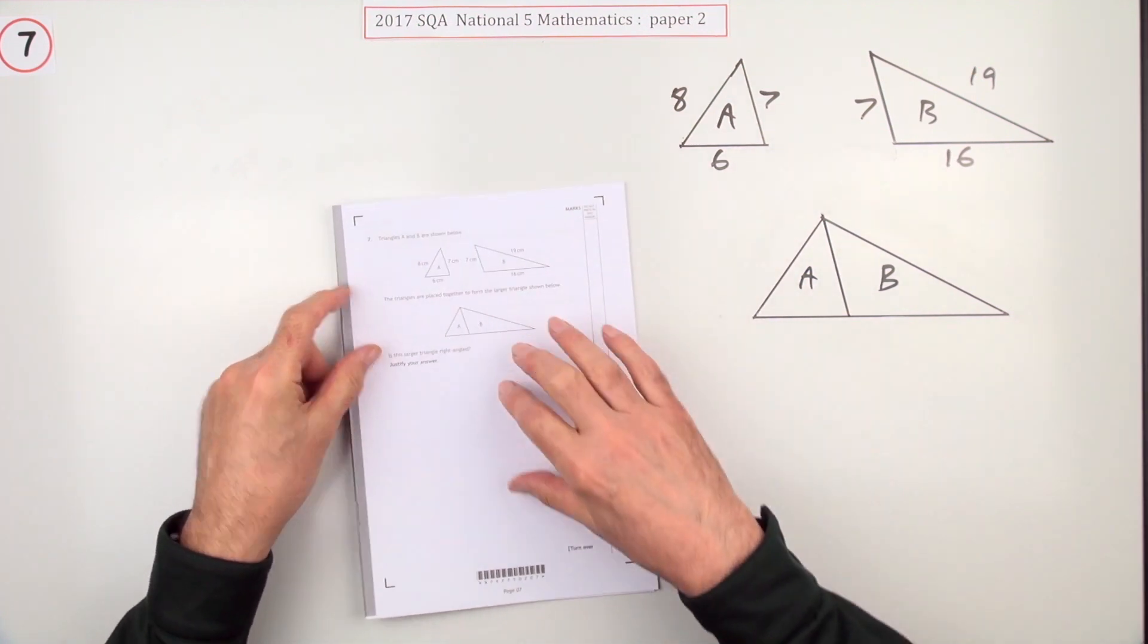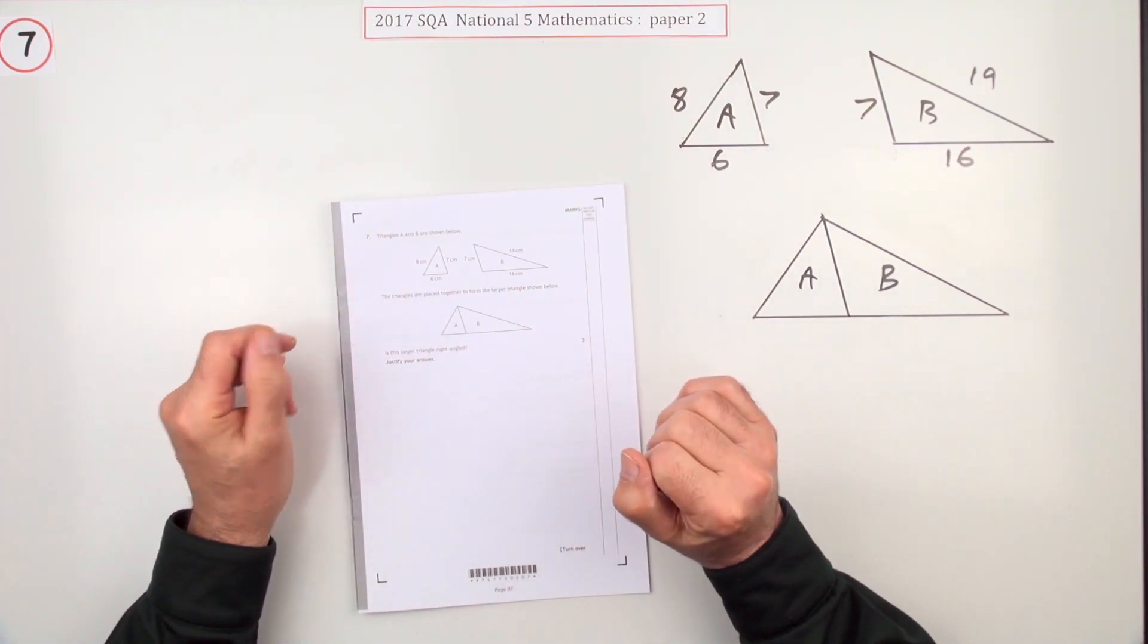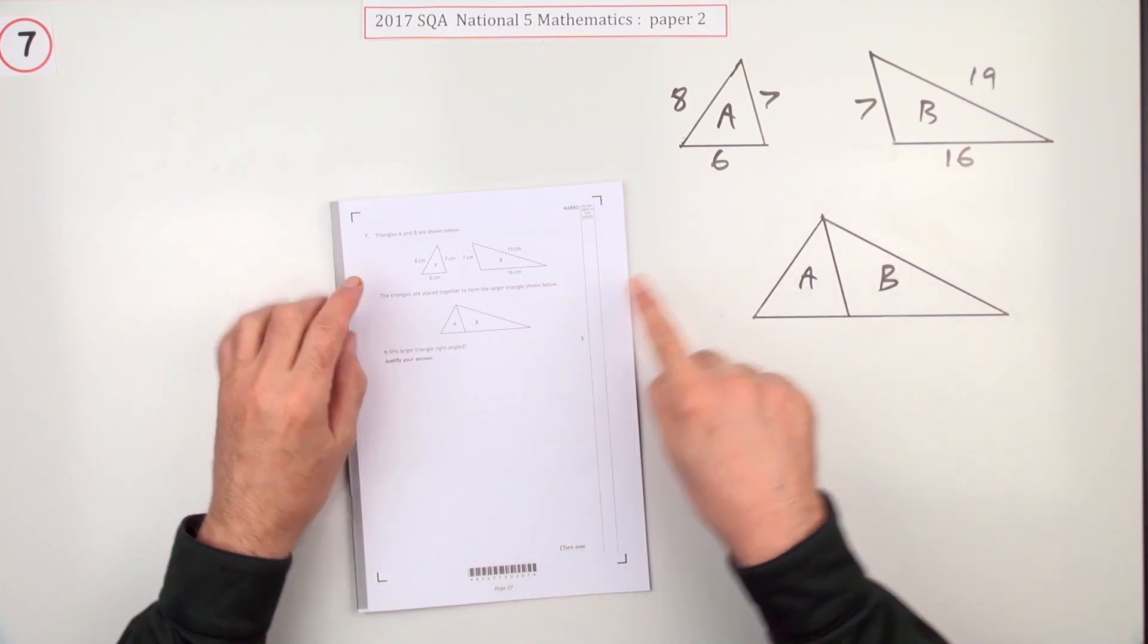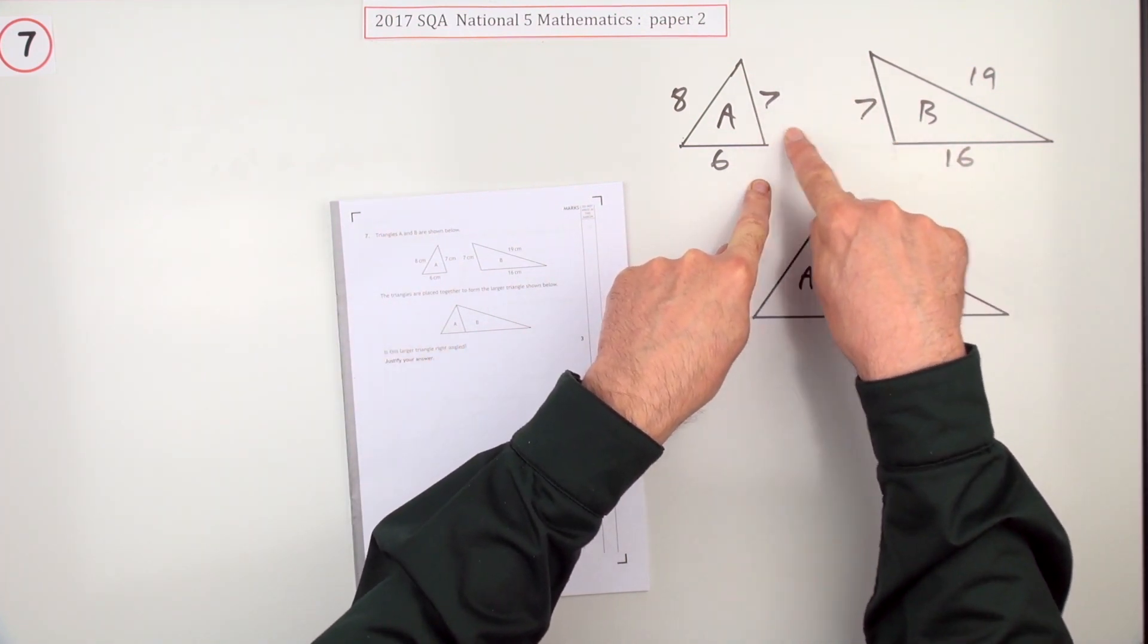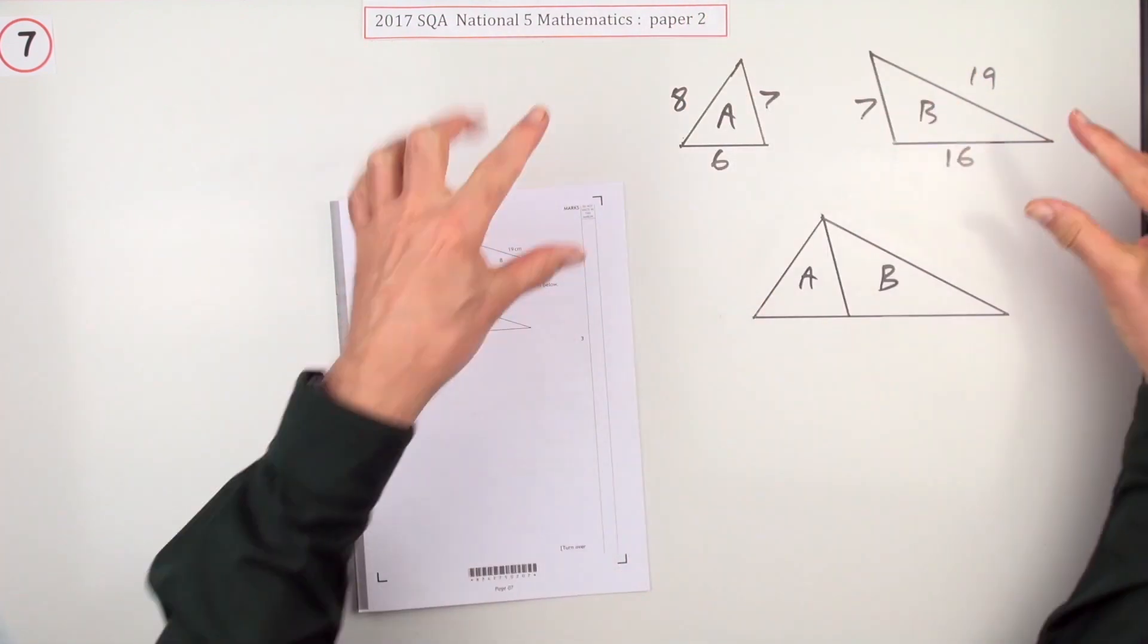So number seven then, from paper two of the 2017 National Five. Here we go, it's a triangles question. You're given these two triangles which have got a common side here of length seven at the same angle.